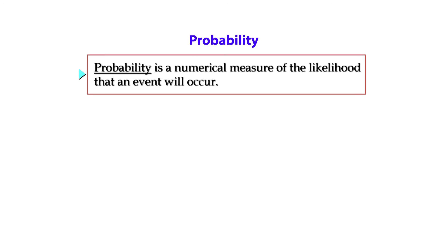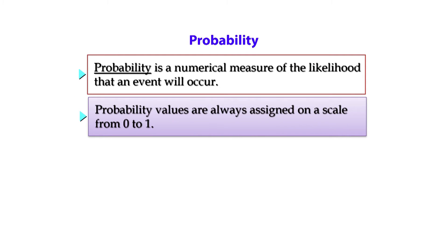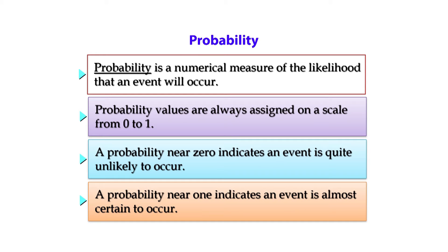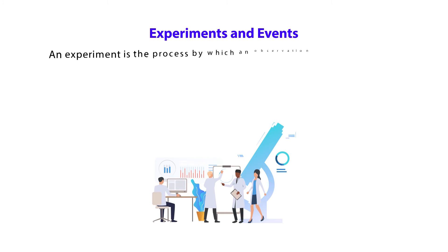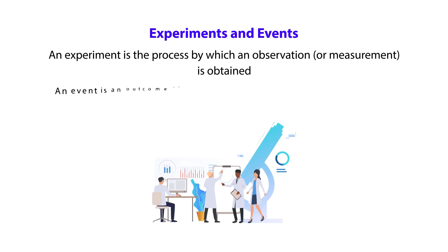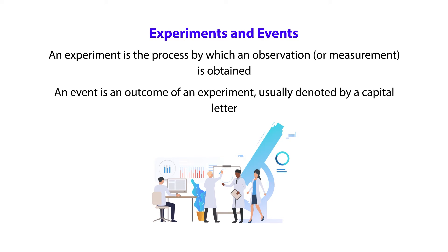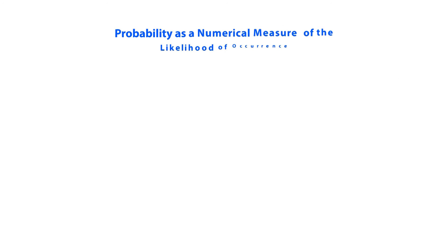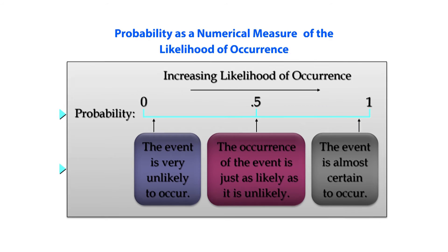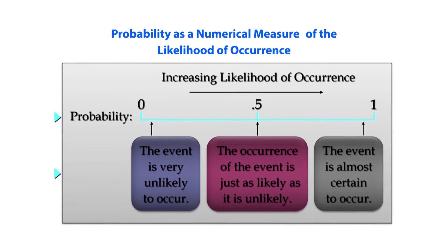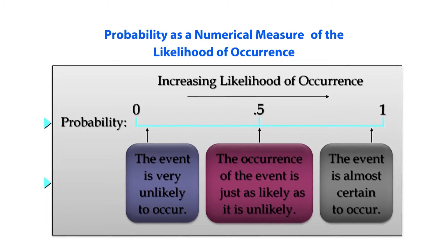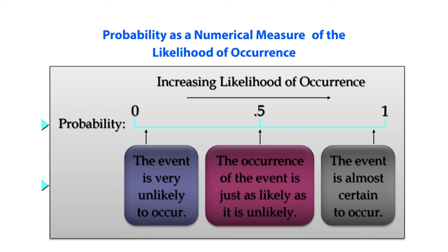Probability is a numerical measure of the likelihood that an event will occur. Probability values are always assigned on a scale from 0 to 1. A probability near 0 indicates an event is quite unlikely to occur, and a probability near 1 indicates an event is almost certain to occur. An experiment is the process by which an observation or measurement is obtained. An event is an outcome of an experiment, usually denoted by a capital letter — it is the basic element to which probability is applied. When an experiment is performed, a particular event either happens or it does not. The probability value varies from 0 to 1: if the value is 0, the event is very unlikely; if 0.5, the occurrence is just as likely as it is unlikely; and if 1, the event is almost certain to occur.